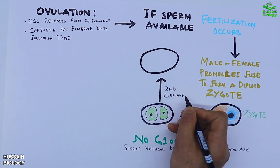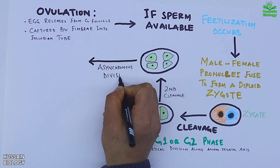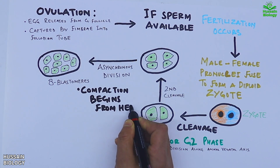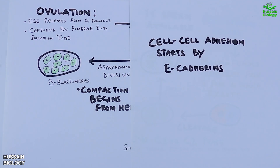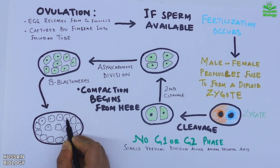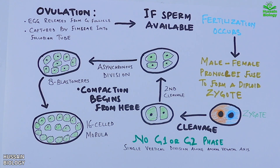Then we get the second cleavage giving four cells, followed by the third cleavage giving eight cells. This cleavage is an asynchronous division, so we have eight blastomeres here. Polarity proteins such as aPKC, PAR3, and PAR6 establish apical-basal polarity in the outer cells, whereas inner cells lack polarity. Compaction begins from here, meaning cell-to-cell adhesion starts with the help of E-cadherins. Finally we get the last cleavage of these eight cells into the 16-cell stage, termed the morula. The morula can reach the 32-cell stage as well, which is why it is also called the 16- to 32-cell stage.